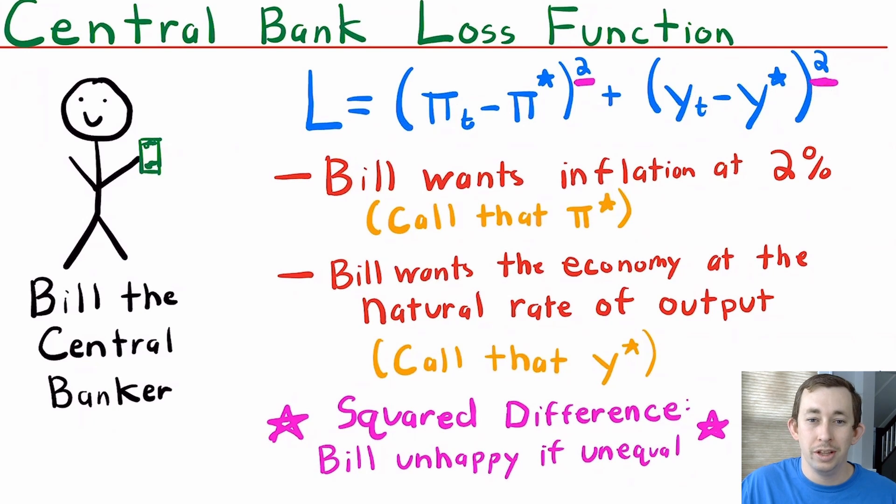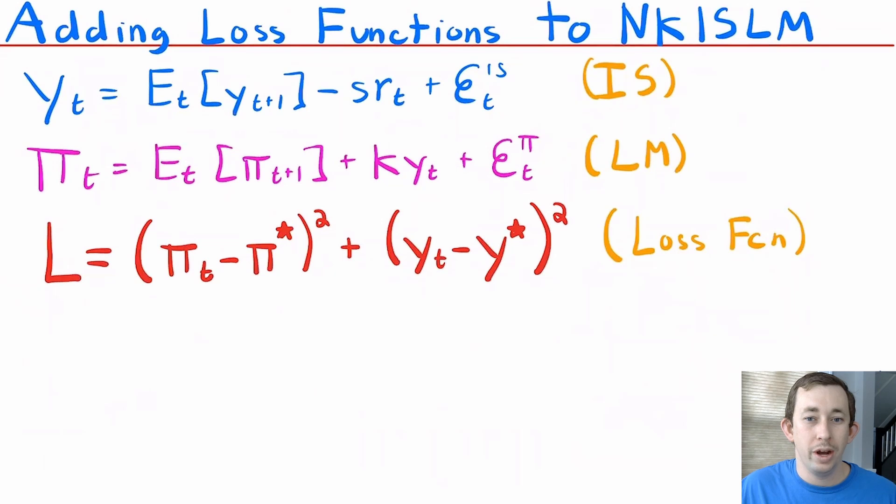The point of the loss function is we want to minimize loss. Bill wants to minimize the amount of loss that he feels, and if he makes it as small as possible, that is how he is going to measure success and stabilize the economy.